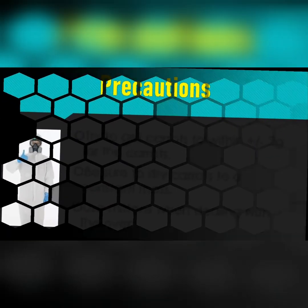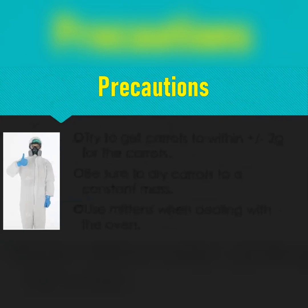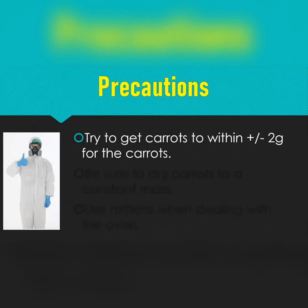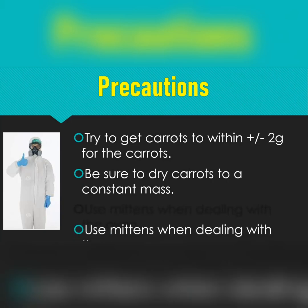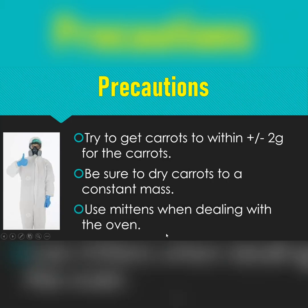For precautions — these are safety measures and steps to ensure accuracy. Try to get your carrots to within plus or minus two grams so they're close in mass. Be sure to dry your carrots to a constant mass, so weigh them multiple times until the mass stops changing. And since you're using an oven, don't burn your hands — use oven mitts when dealing with the oven.